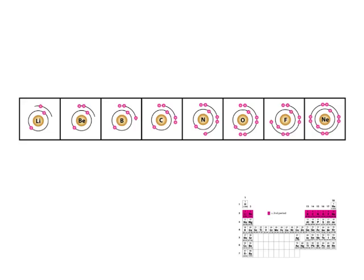Here's lithium — it is in group 1, and you can see it has one valence electron. Here is beryllium in group 2; it has two valence electrons. And here is boron in group 13; it has three valence electrons. Basically, elements that have one, two, or three valence electrons are typically metals — boron is probably not a good example, but we'll keep going. To get a full valence shell, it's a little too hard for them to gain extra electrons, so what they tend to do is lose electrons.